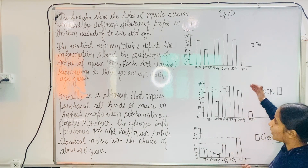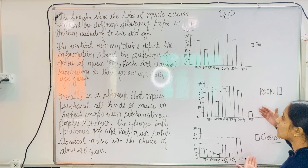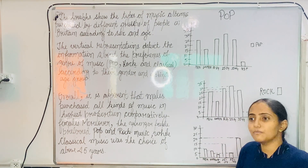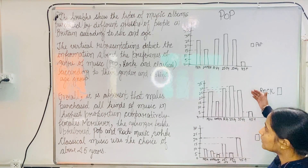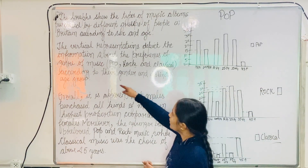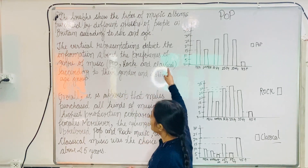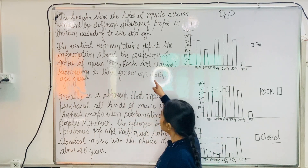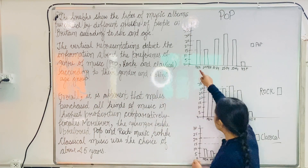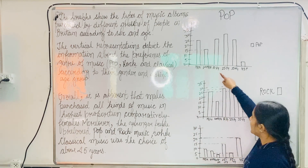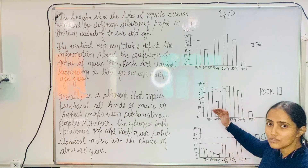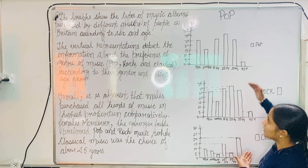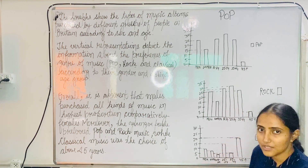What information? About the preferences of genre of music. Preferences means what the people prefer, what kind of music they like. So, the preferences of genre of music — in brackets we can write different types: pop, rock, and classical — according to their gender and distinct age groups, men and women. This is how we can paraphrase the statement.